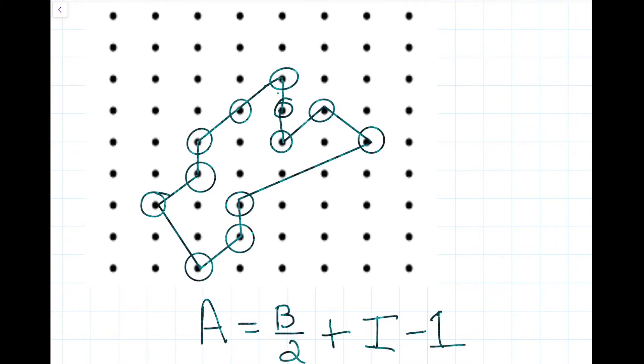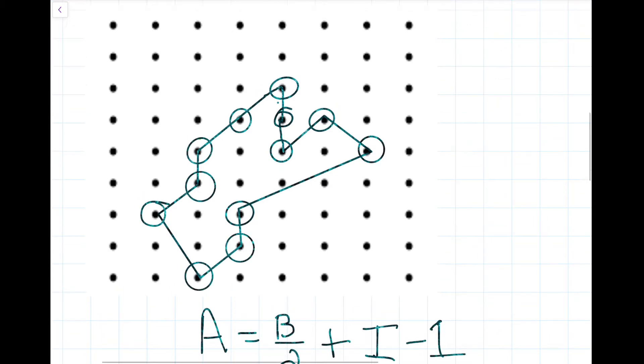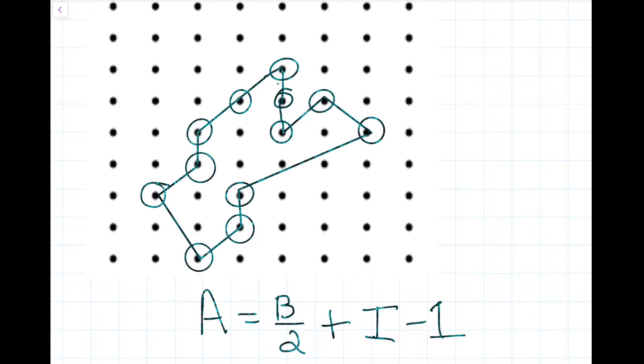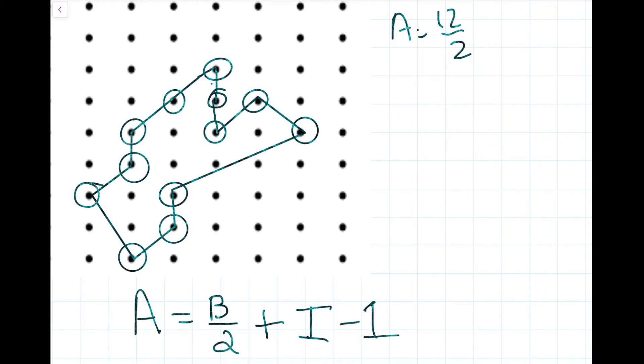Okay, so there's 12 boundary points, so the area is going to be 12 over 2 plus the interior points minus 1. So, the area is going to equal 6 plus I minus 1. Now, the interior points, let's see how many there are.